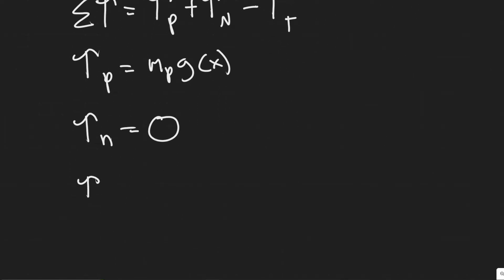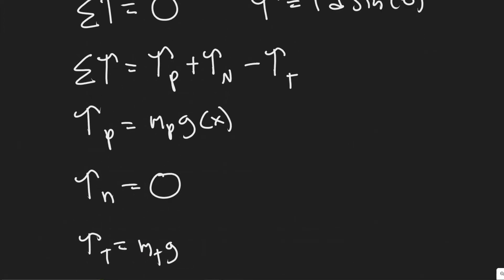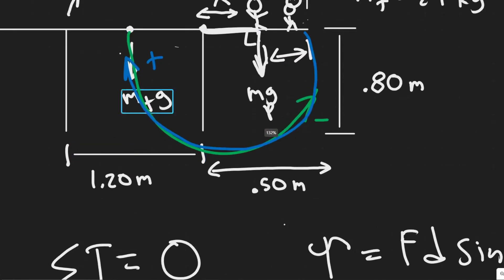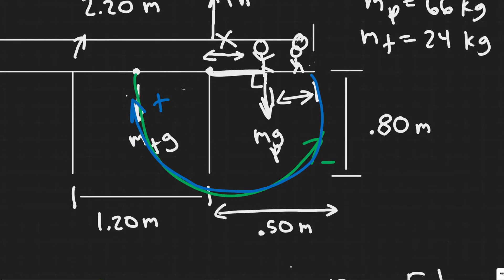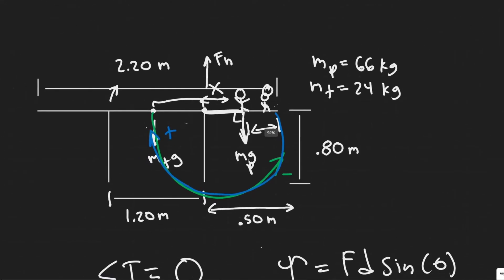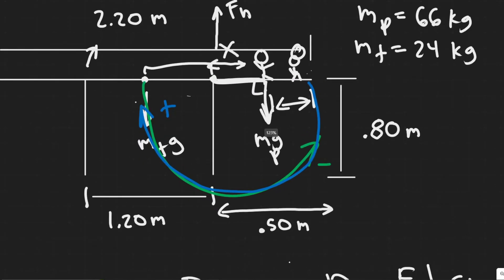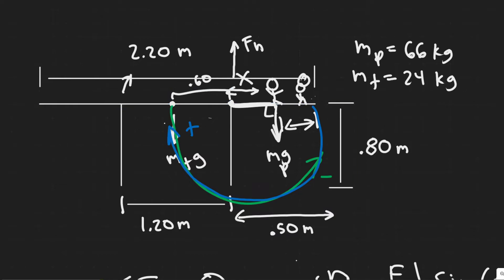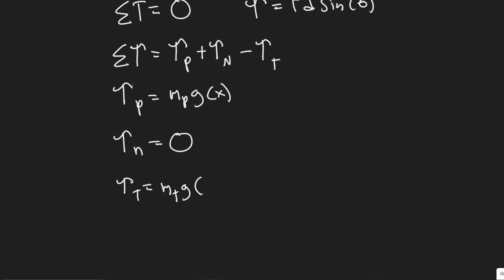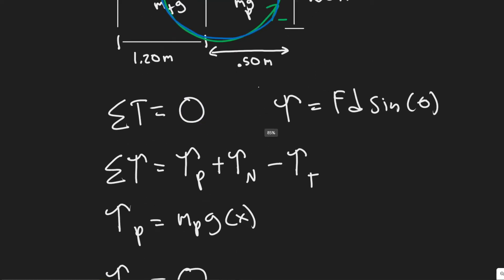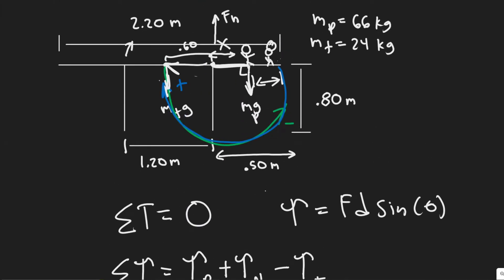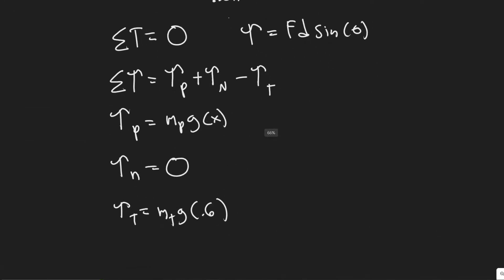Next we have the torque due to the table. The force is mTG - the table's mass times gravity. The distance: the whole table is 2.2 meters, and we're finding the center. So 0.5 plus 0.6 equals 1.1, which is half of 2.2, so we know we're in the right spot - the distance from the pivot to the table's center is 0.6 meters. The sine of theta is again 90 degrees, sine of 90 is 1, so we can ignore that.